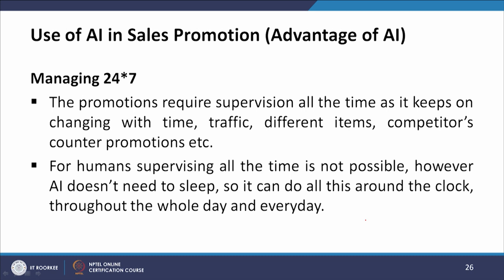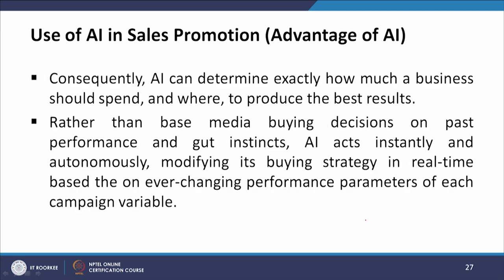For humans, supervising all the time is not possible. However, AI does not need to sleep, so it can do all this around the clock, every day. Consequently, AI can determine exactly how much a business should spend and where to produce the best results. Rather than basing media buying decisions on past performance and gut instinct, AI acts instantaneously and autonomously, modifying its buying strategy in real time based on ever-changing performance parameters of each campaign variable.